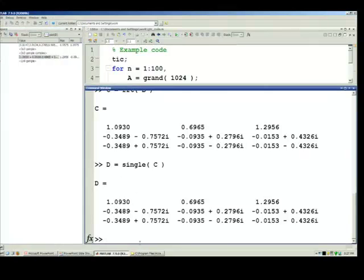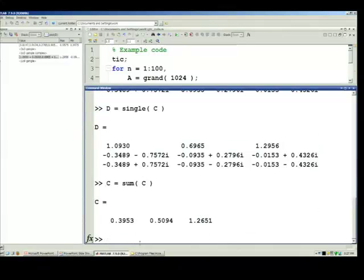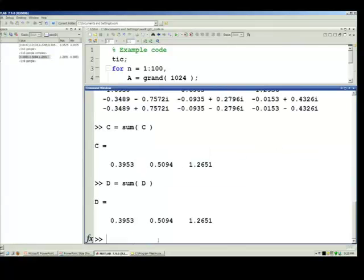Let's say we want to do a sum of the columns so we can do C equals sum of C. So similarly, just to show that it's the same on the CPU, we can do D equals sum of D. Okay? So it's sum the columns of that matrix.